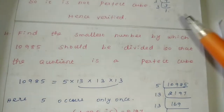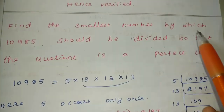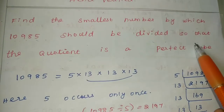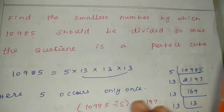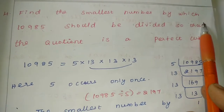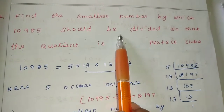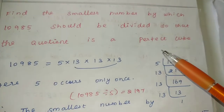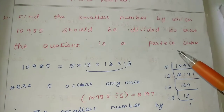Fourth sum: find the smallest number by which 10985 should be divided so that the quotient is a perfect cube. We need to find the smallest number to divide 10985 to get a perfect cube as the quotient.